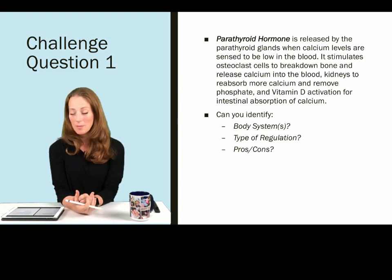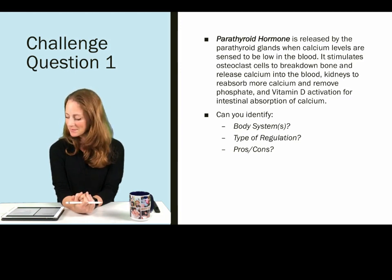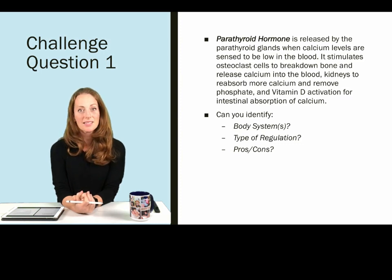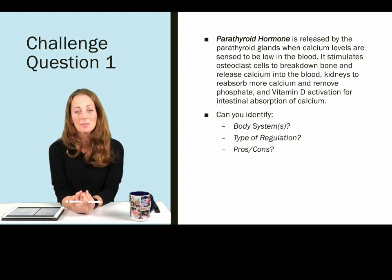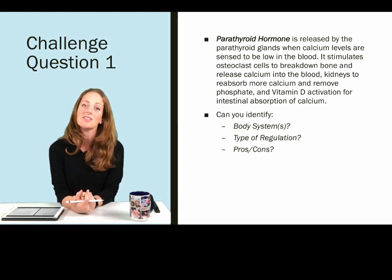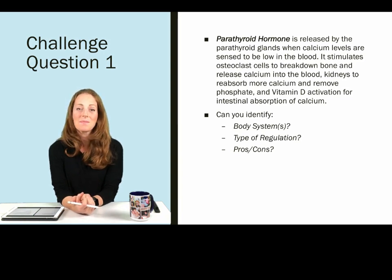Parathyroid hormone is released when the parathyroid glands sense low calcium in the blood. It stimulates osteoclast cells to break down bone to release more calcium, kidney cells to reabsorb more calcium into the blood, remove phosphate, and activate vitamin D so we can get more intestinal absorption of calcium. All of these changes cause an increase in calcium in the blood.